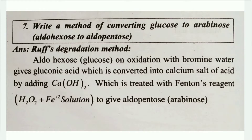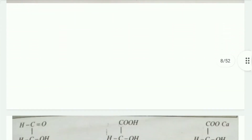Write a method of converting glucose to arabinose. Here, glucose is an aldohexose and arabinose is an aldopentose. Keep this in mind — glucose equals aldohexose, arabinose equals aldopentose. Don't get confused.